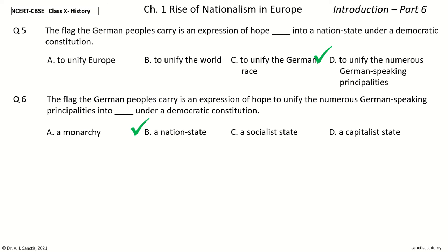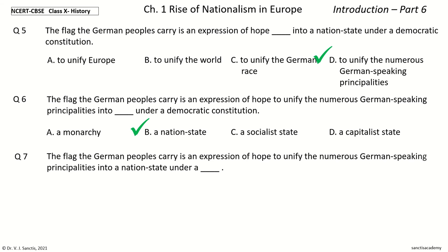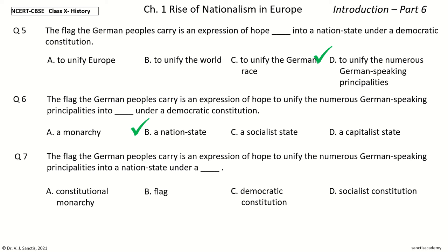The answer to Question 6 is a nation state. Question 7: The flag the German peoples carry is an expression of hope to unify the numerous German-speaking principalities into a nation state under a [blank]. The options are: constitutional monarchy, flag, democratic constitution, socialist constitution. And the answer is democratic constitution. So, the flag the German peoples carry is an expression of hope to unify the numerous German-speaking principalities into a nation state under a democratic constitution.